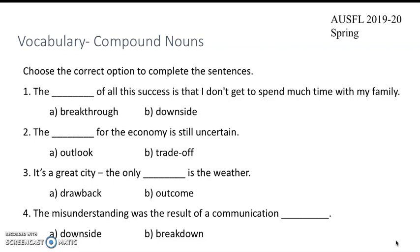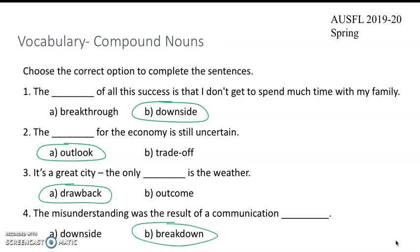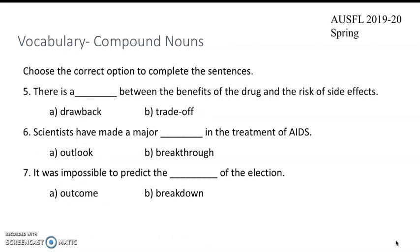Let's check the answers. Number one is B, two is A, three is A and four is B. Again pause your video and continue doing this exercise. Number five is B, number six is B and number seven is A.